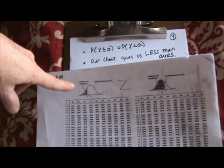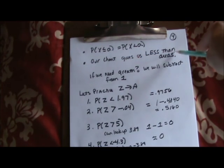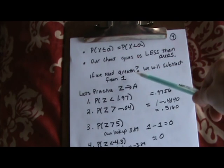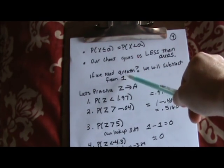Whenever you get a z-chart in another class, always look at the top — that is absolutely critical so you know which direction the areas are given. My chart shades to the left, so it gives you less-than areas. Some charts give greater-than areas; I won't be using those. The chart you'll be given on tests gives less-than areas. If they ask about greater than, remember the entire curve equals one, so we subtract from one — very similar to the complement rule.